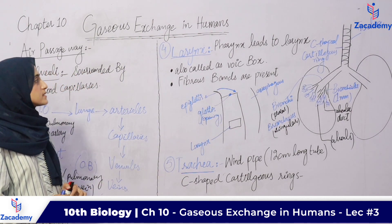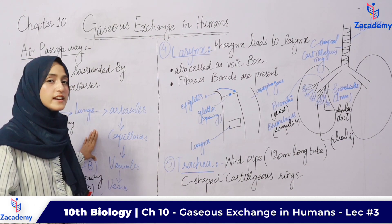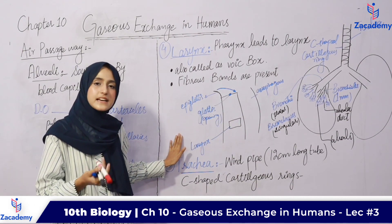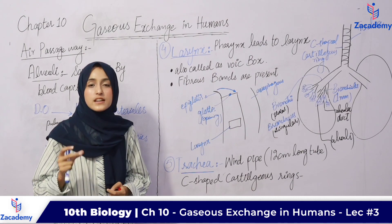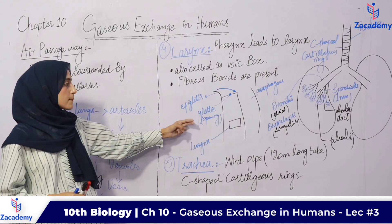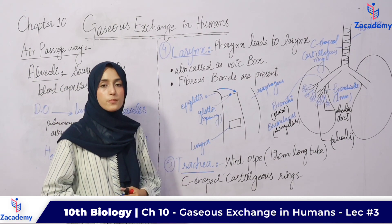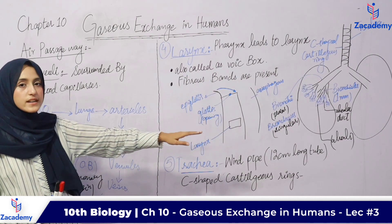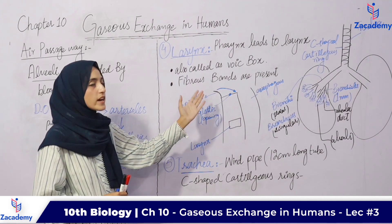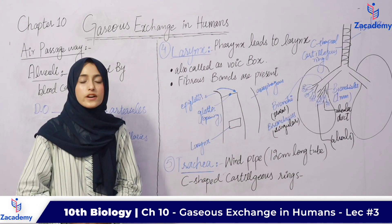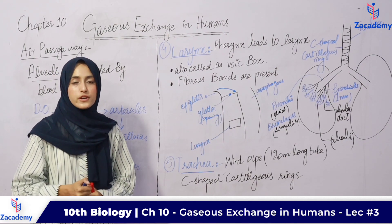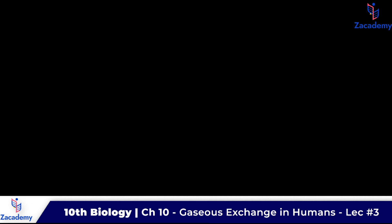Dear students, this whole topic can be asked as a long question in the board exam. Different parts can also be asked as short questions — for example, define trachea, pharynx, or larynx. The difference between glottis and epiglottis can be asked as a two-mark short question. You can also draw the schematic diagram of the trachea in your paper. I hope this lecture was easy for you and you had no difficulty. Thank you so much.